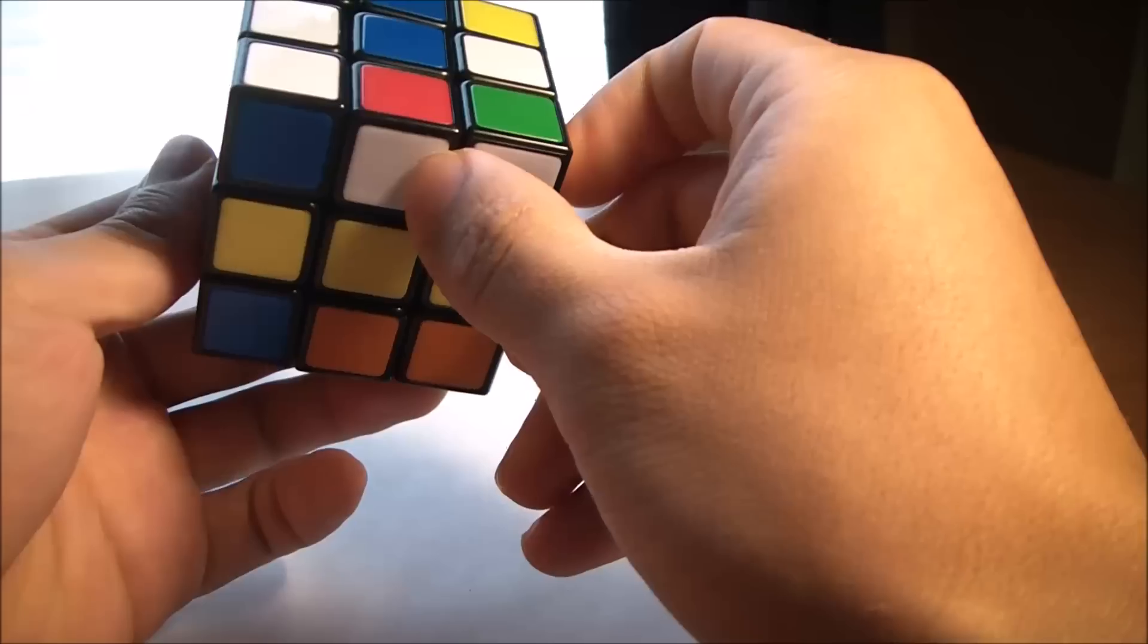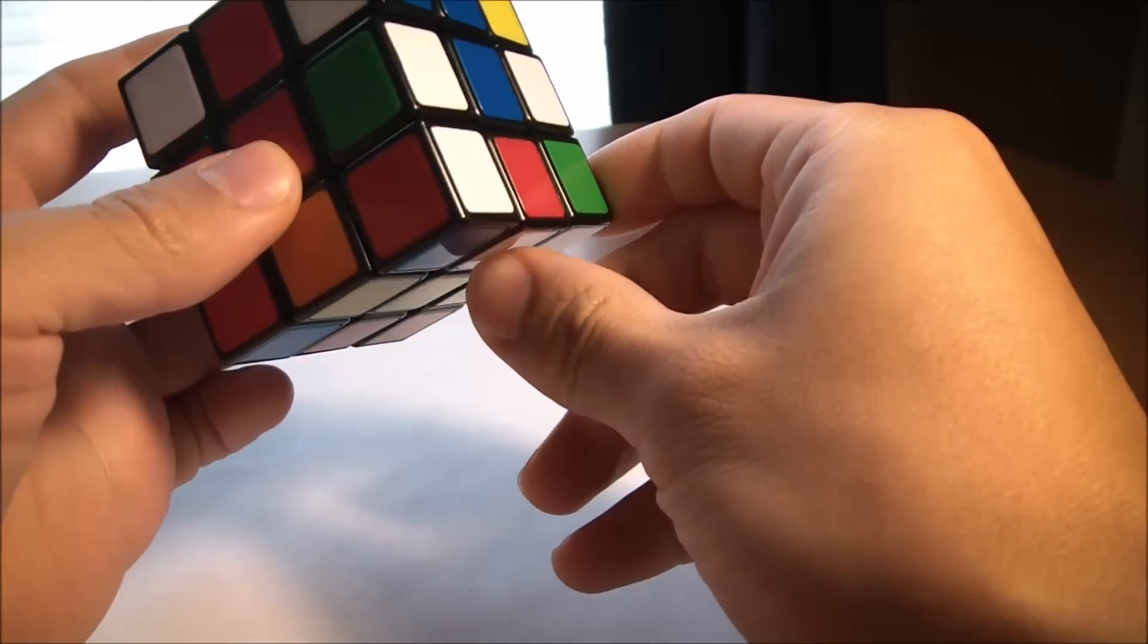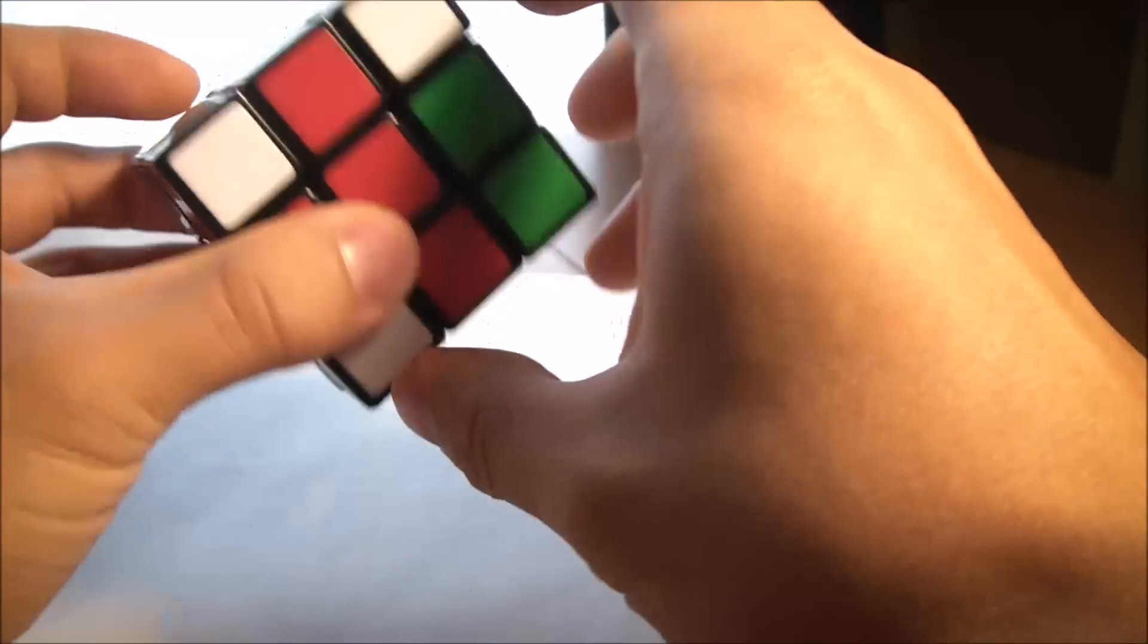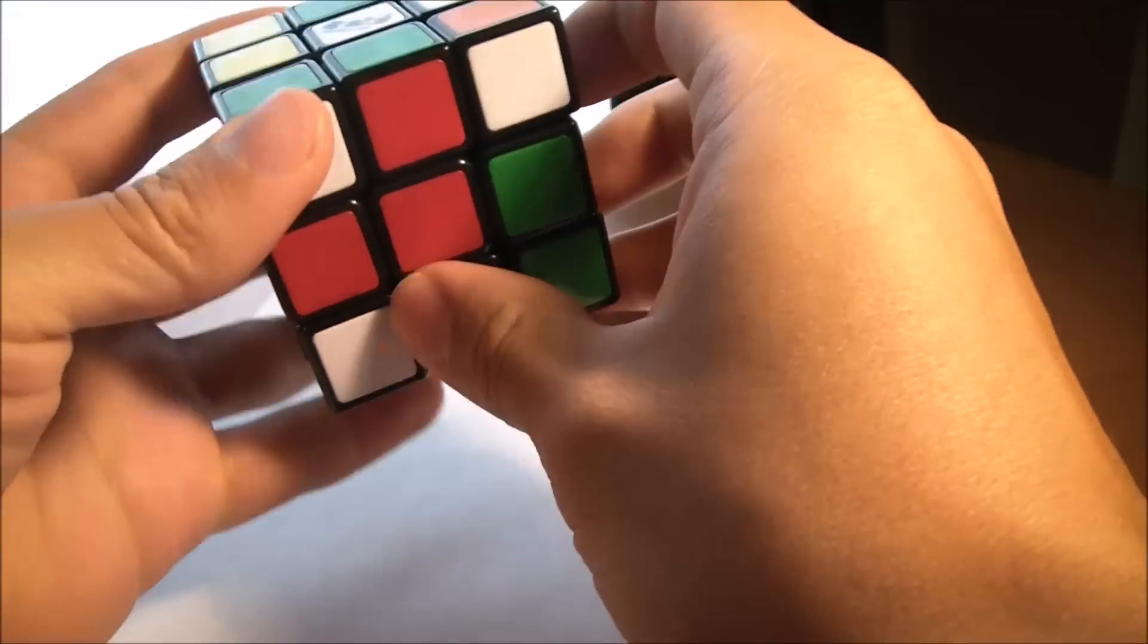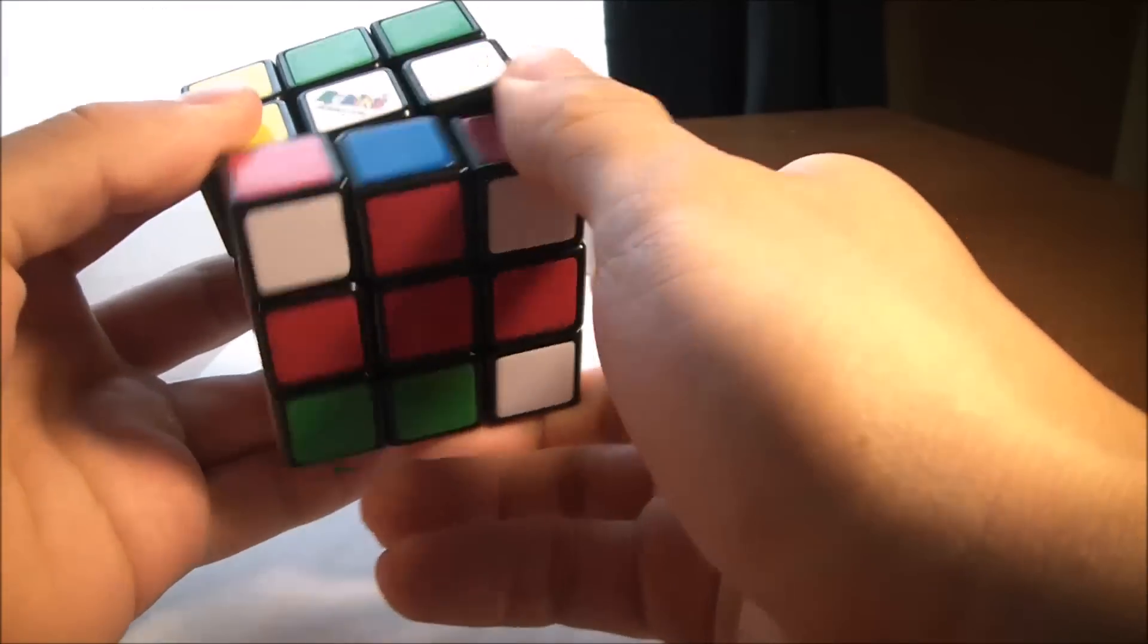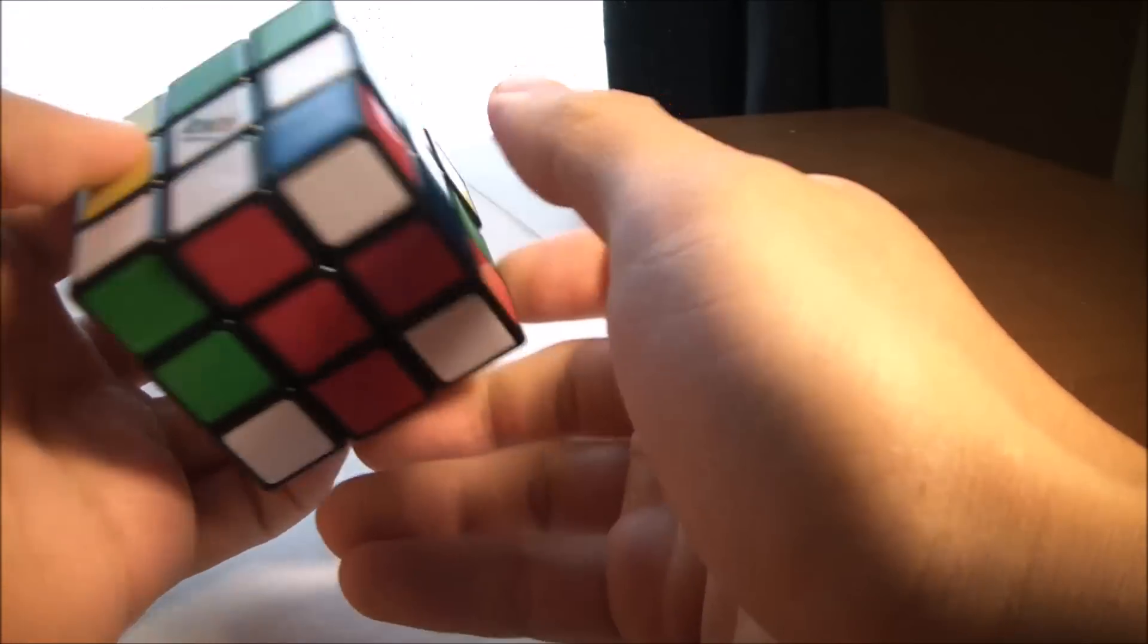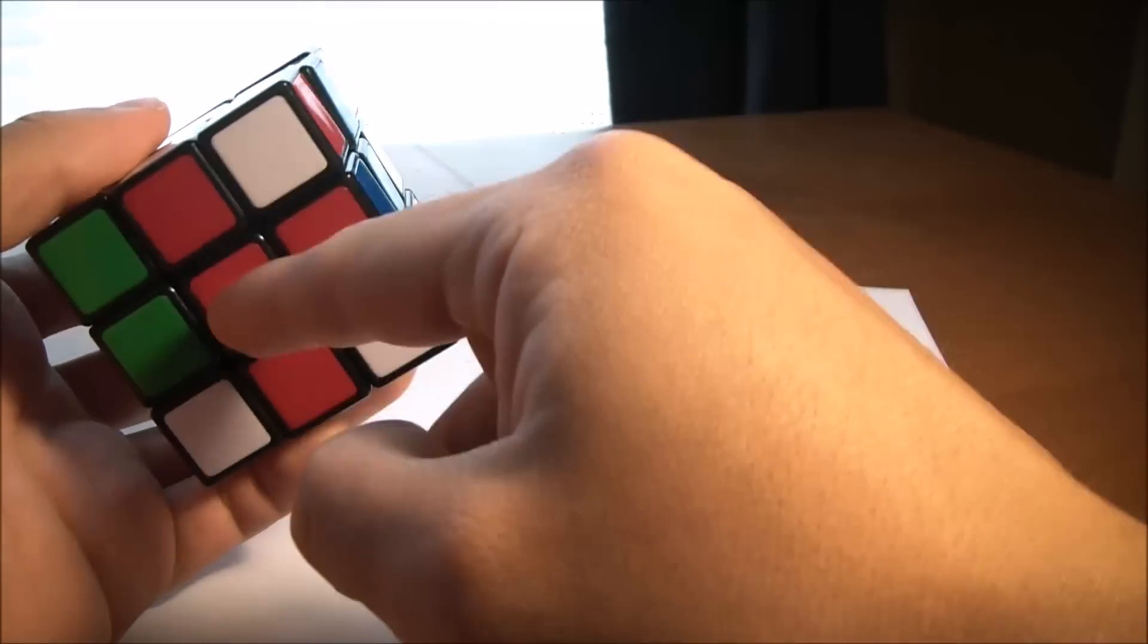So all you have to do is bring the white piece to the red side, directly underneath the white side, and just flip it on over. Just do a twist twice. Now it's there.